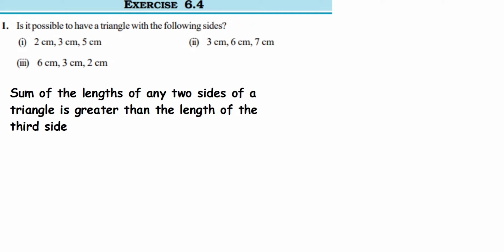We'll check this condition for all three problems. For the first one, we have 2 cm, 3 cm, and 5 cm. Let's check: 3 plus 5 is greater than 2 — obviously yes. Next, 2 plus 5 is greater than 3 — yes. Then, 2 plus 3 equals 5, but 5 is not greater than 5.